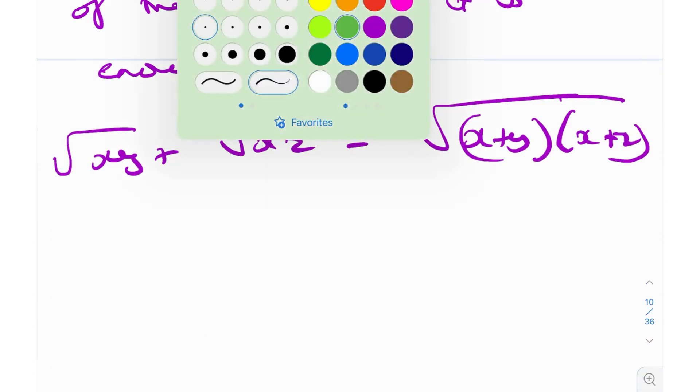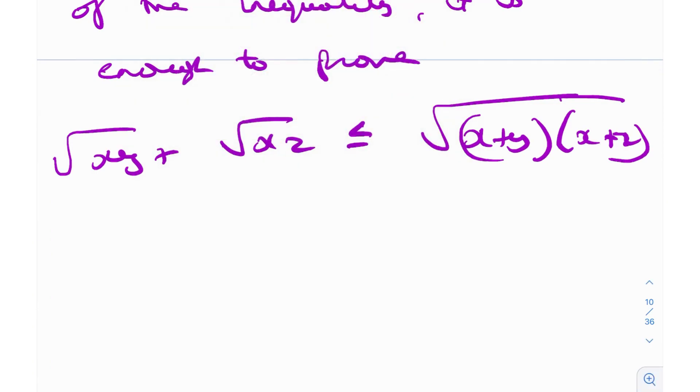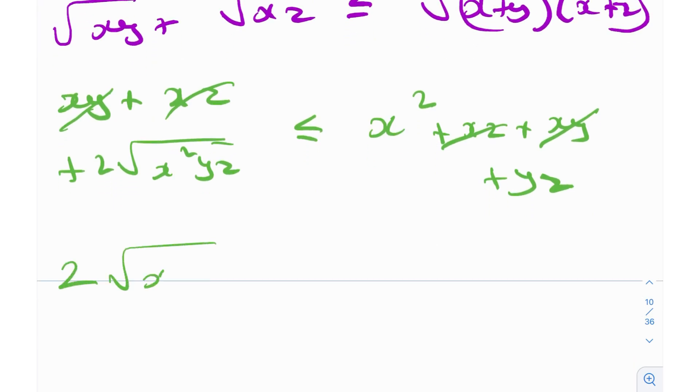Now that's perfect. Now, how do we prove this? It's actually very simple. You just square both sides. Again, both of these left-hand side and right-hand side are positive, so you can just square them without worrying. So you'll get XY plus XZ plus 2 root X square YZ will be less than or equal to the square and just open it up. So you'll get X square plus XZ plus XY plus YZ. A couple of things cancel out, XY and XZ. So we have 2 square root of X square YZ is less than or equal to X square plus YZ.